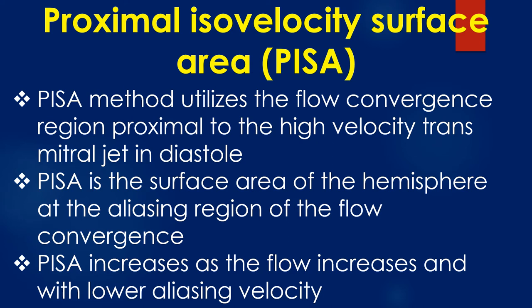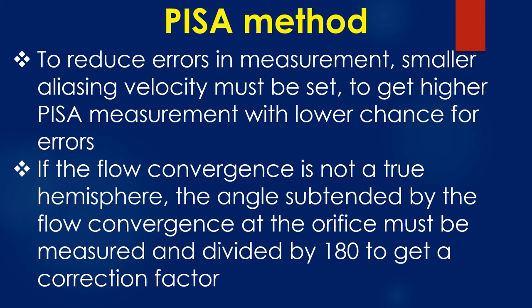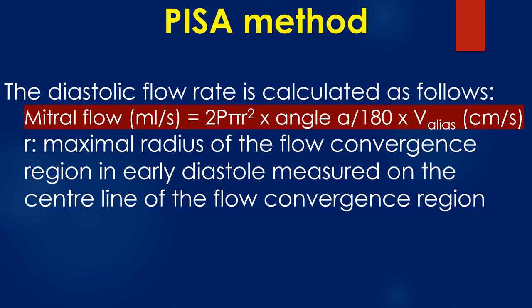The proximal isovelocity surface area (PISA) method utilizes the flow convergence region proximal to the high-velocity transmitral jet in diastole. PISA is the surface area of the hemisphere at the aliasing region of the flow convergence. PISA increases as flow increases and with lower aliasing velocity. To reduce errors, a smaller aliasing velocity must be set to get a higher PISA measurement. If the flow convergence is not a true hemisphere, the angle subtended by the flow convergence at the orifice must be measured and divided by 180 to get a correction factor. The diastolic flow rate is calculated as: mitral flow = 2πR² × (angle alpha / 180) × aliasing velocity.